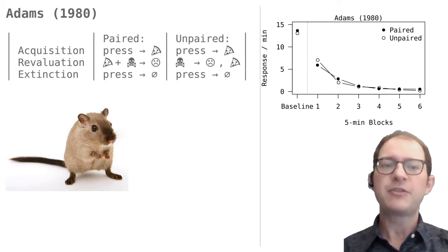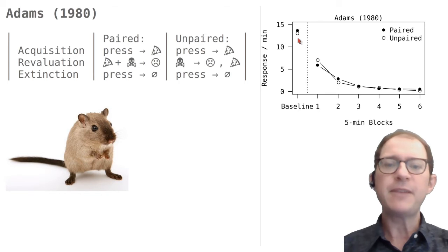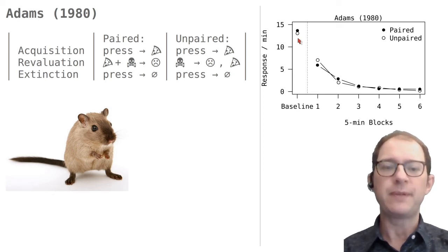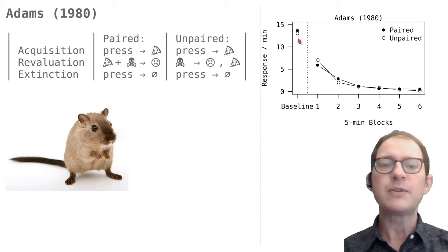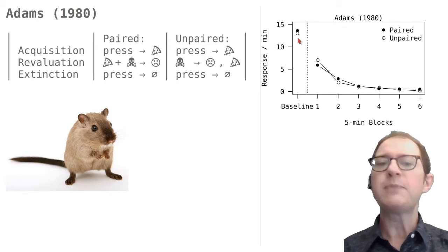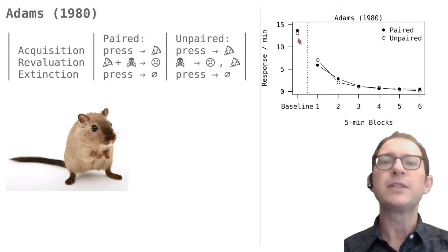But this is not what happened, as we see in this graph. The paired and unpaired groups pressed the lever exactly the same number of times — having been sick after eating the food seemed to have no effect on the rat's willingness to press the lever. The rat happily performed an action that would give them something they did not want. Adams checked afterwards that the paired group had in fact developed the food aversion, while the unpaired group had not. In summary, in this experiment the rats did not demonstrate any knowledge of the outcome of their own actions, which agrees with the stimulus-response view of instrumental conditioning.